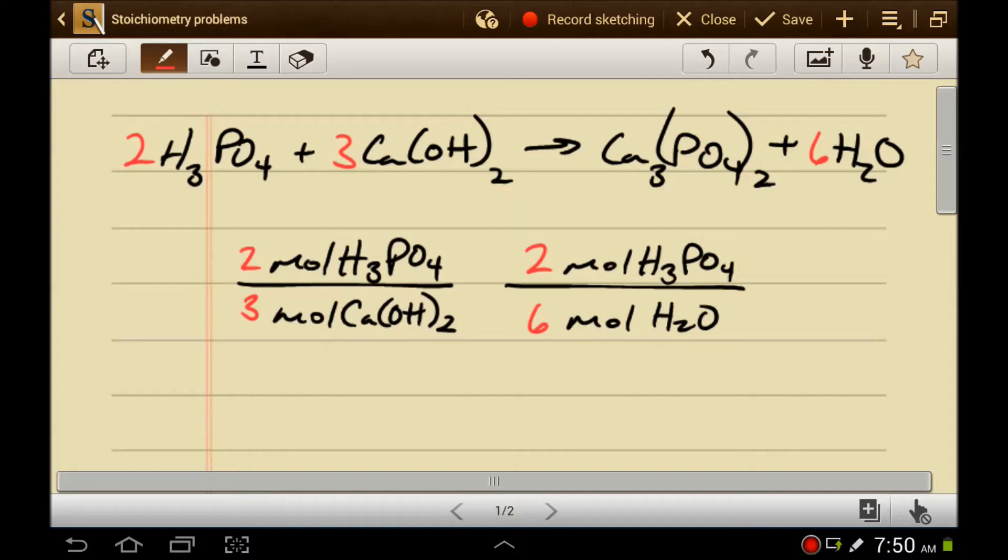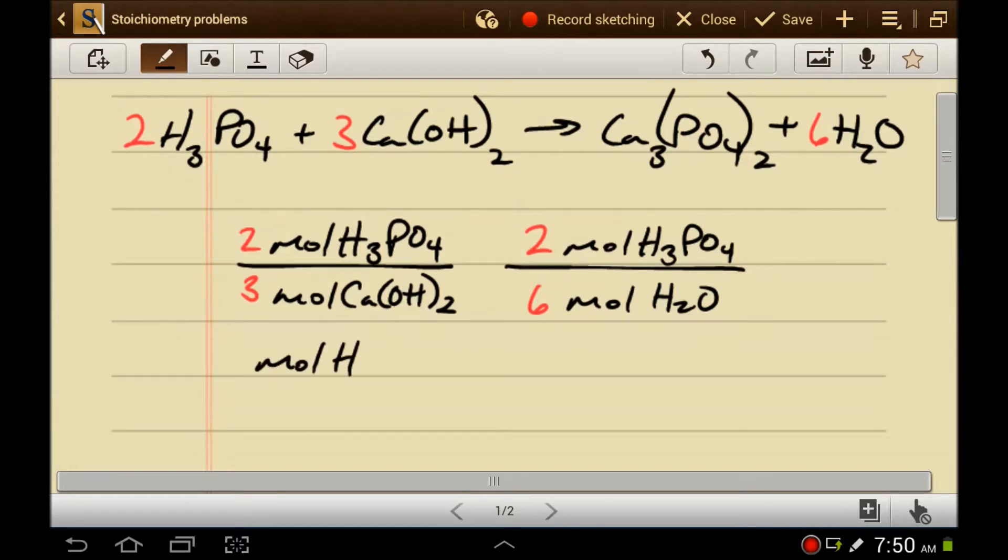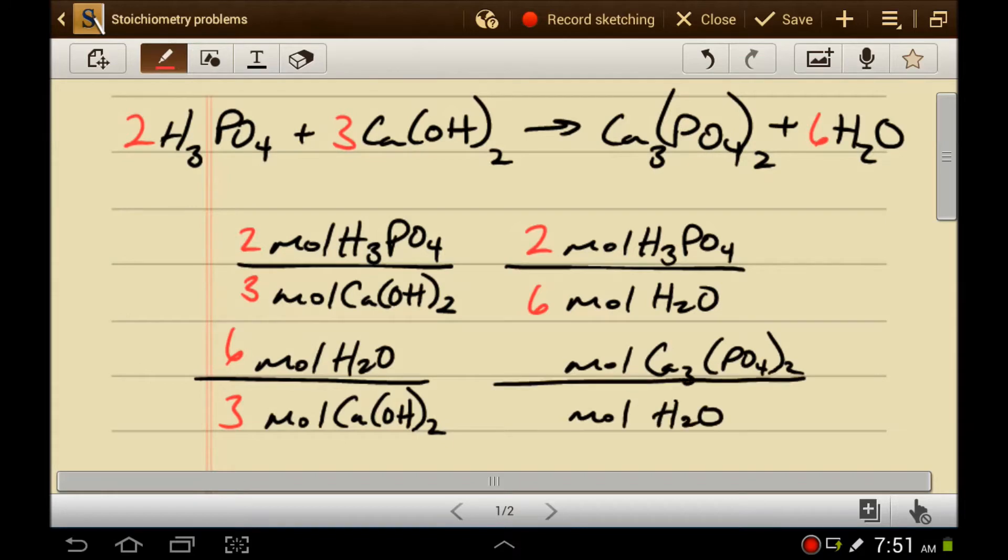So you can write any kind of ratio you want. You could write the ratio of water to calcium hydroxide, or you can write the ratio of calcium phosphate to water. Now water's coefficient is 6, and you might be tempted to think that calcium phosphate's coefficient is 0 because it doesn't have one, but that's not true. Calcium phosphate's coefficient is actually 1. So the ratio of calcium phosphate to water is 1 to 6.